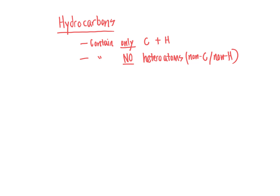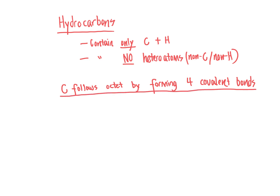Hydrocarbons are very common and come in a variety of different motifs — three different types of themes. Keeping in mind that carbon follows the octet rule by forming four covalent bonds, there are three ways carbon achieves those four covalent bonds needed to maintain its complete octet with no formal charges on any of the atoms.